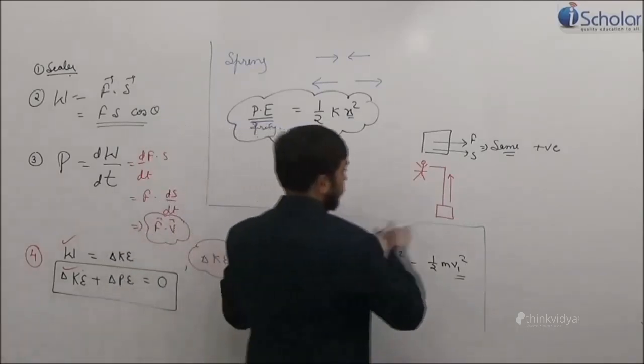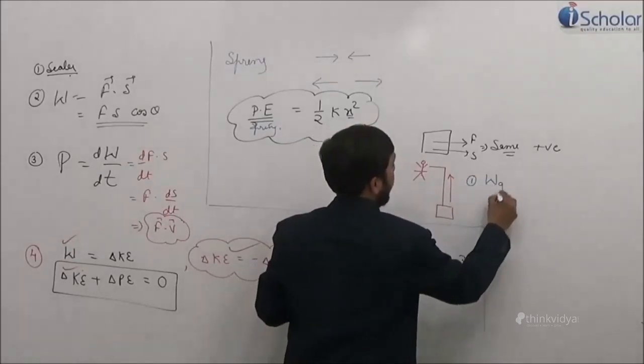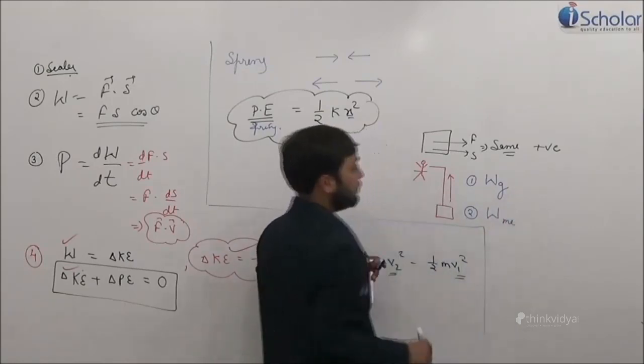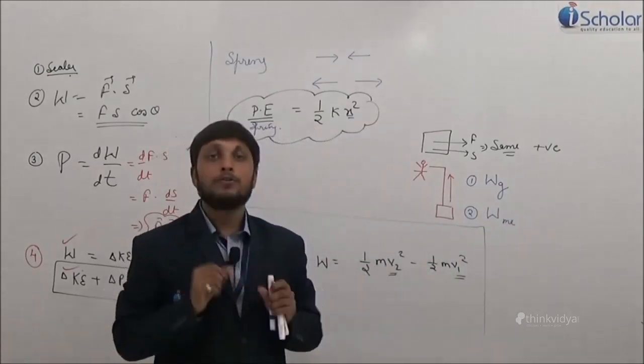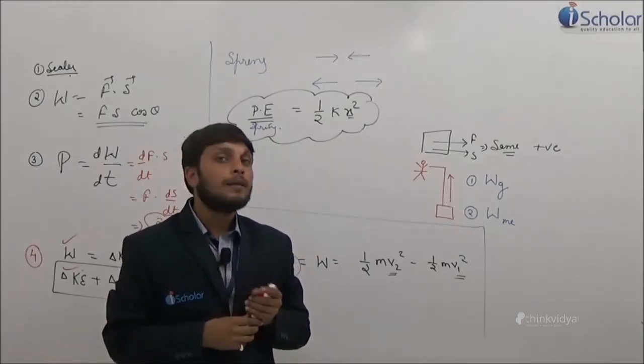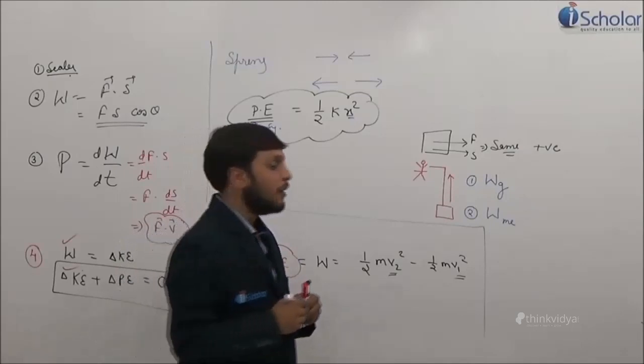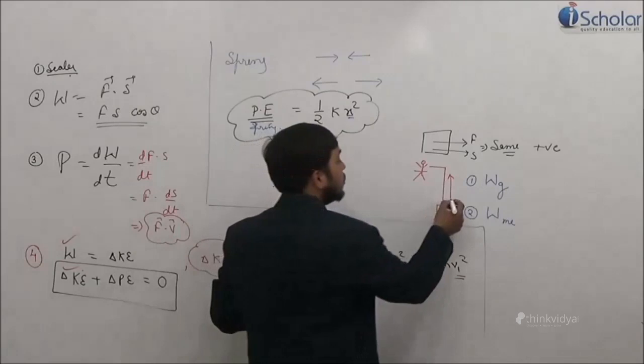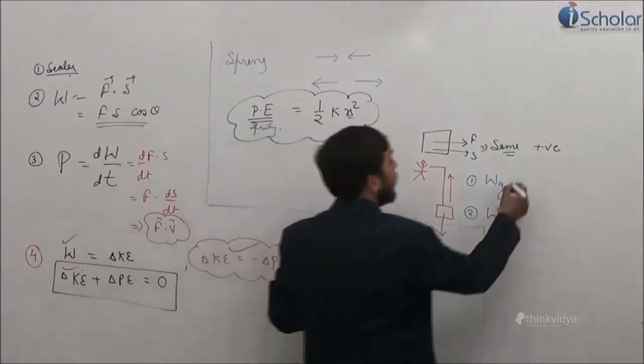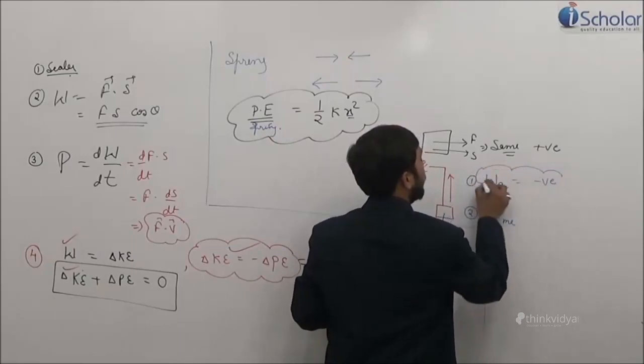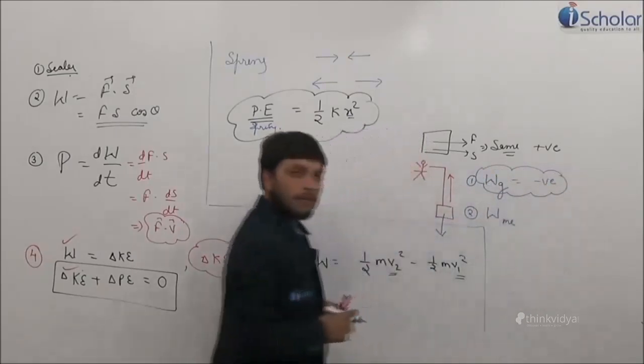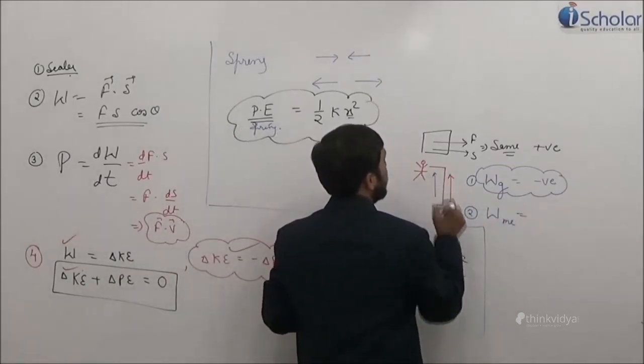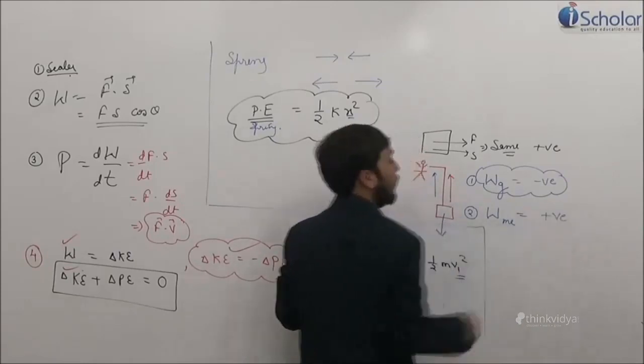First question is work done by gravity and second is work done by me. So first question is work done by gravity. What is the direction of gravity on the block? You will say sir, this direction. What is the direction of displacement? This direction. So work done by gravity will be negative. Work done by me will be, force applied by me is in this direction, displacement is this direction, so it will be positive.